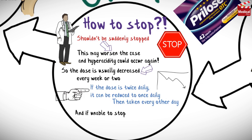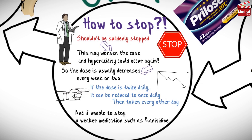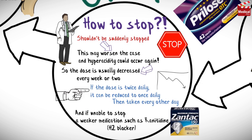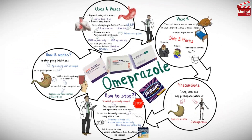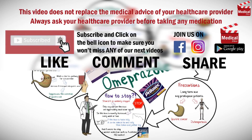If unable to stop, a weaker medication such as ranitidine, which is one of the H2 blockers, may be used to continue reducing the dose of omeprazole. Always ask your healthcare provider about your drug. That's all for this video — subscribe to get more drug information.